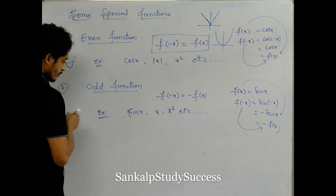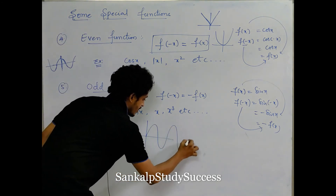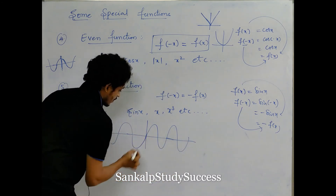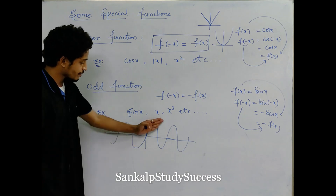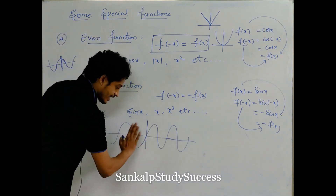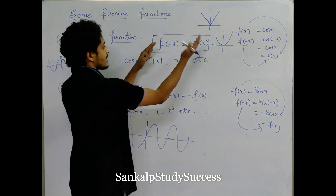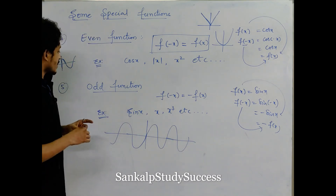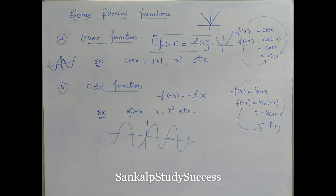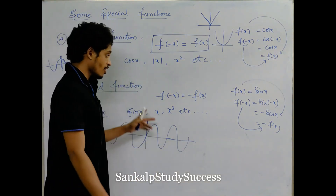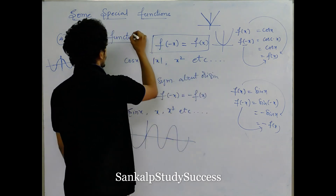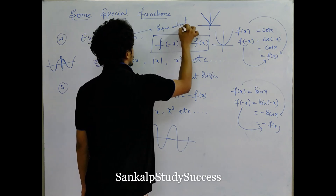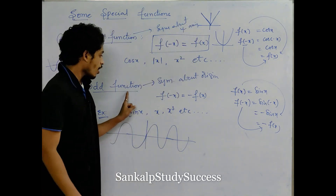This is the sign function — it is symmetrical in this way. If you fold the paper two times, it will coincide, meaning it is an odd function. To summarize: even function is symmetrical about the y-axis; odd function is symmetrical about the origin. That means for an odd function, the origin is the point of symmetry — it will coincide when folded both along x and y axes.